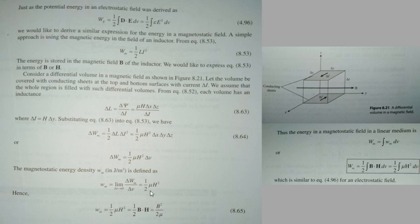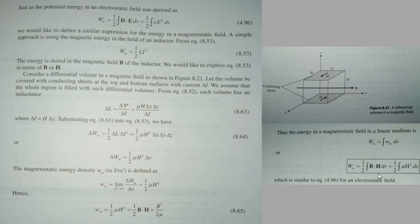Now we have to calculate the total magnetic energy. We integrate over the entire volume. The total magnetic energy Wm equals the integral of wm dv, which gives the final expressions: Wm equal to half integral of B dot H dv, or equivalently half integral of mu H square dv.